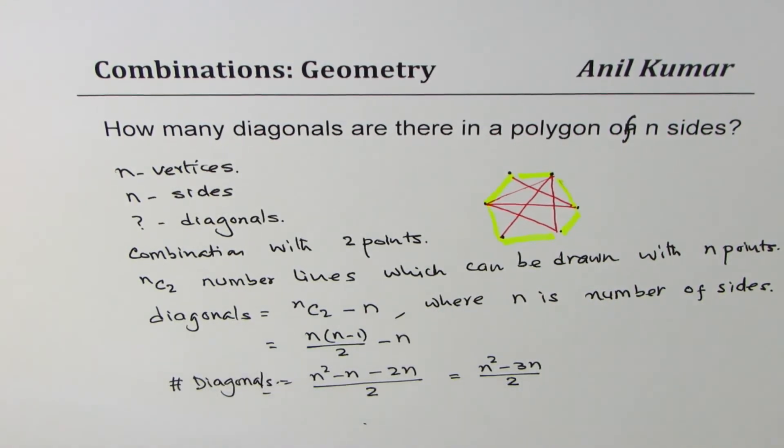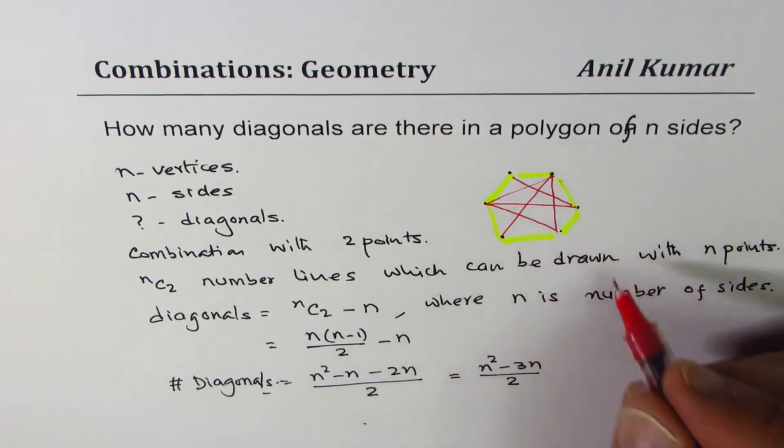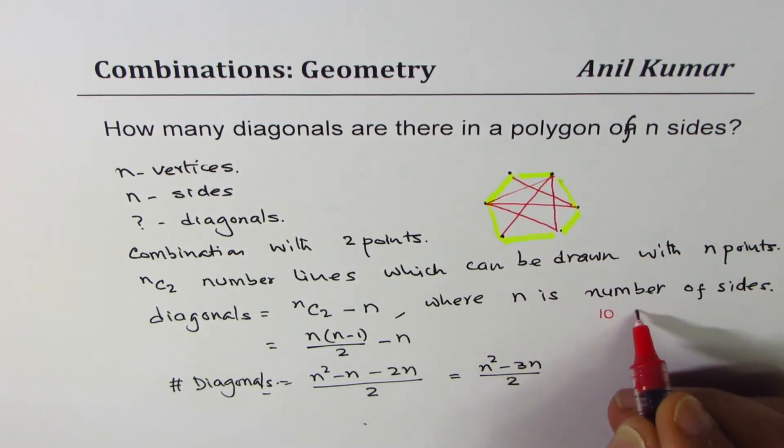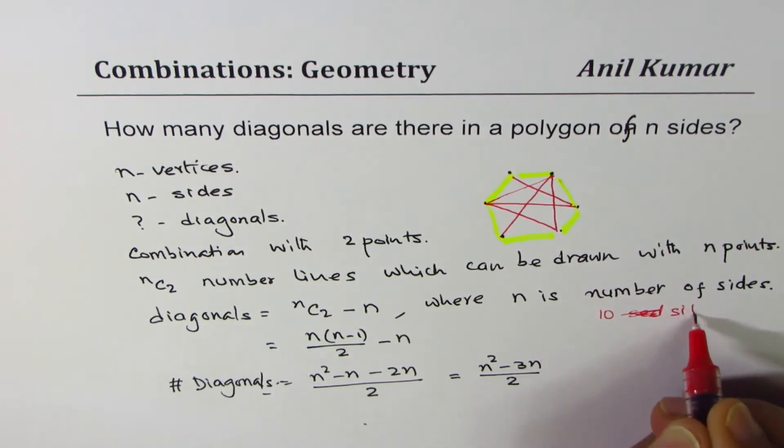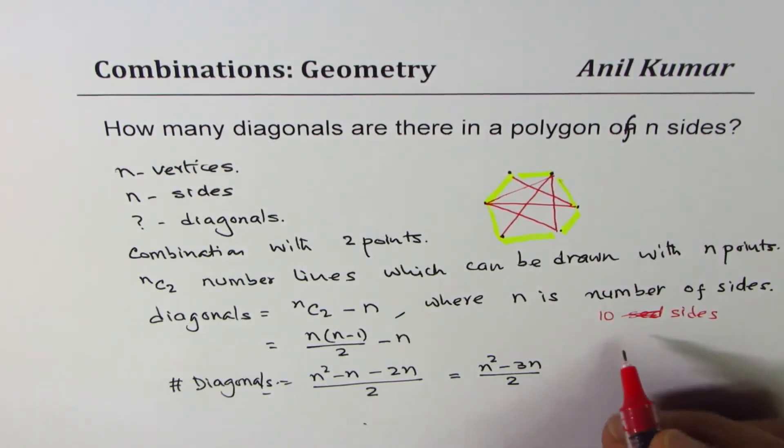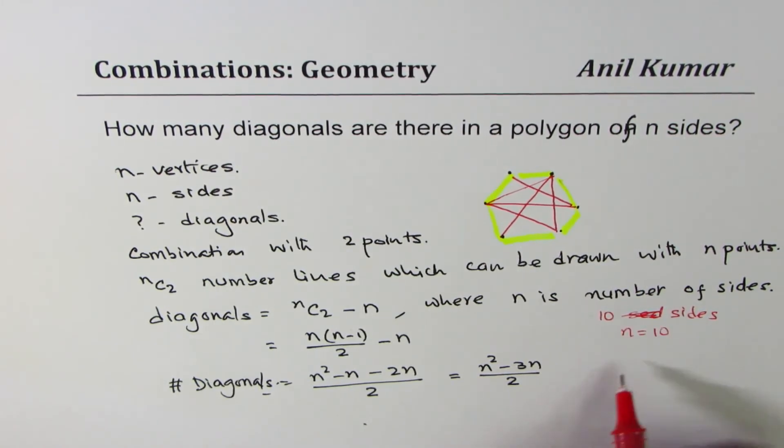You get an idea. So if I have a polygon with 10 sides, for example, 10 sides - in that case, n equals to 10. And the number of diagonals will be how many? Let's calculate.